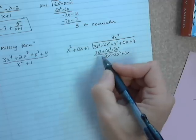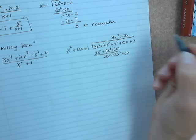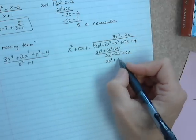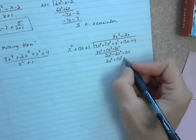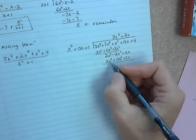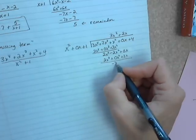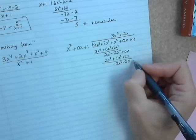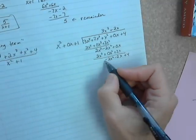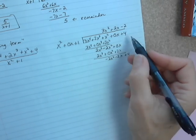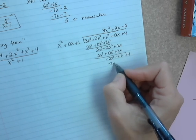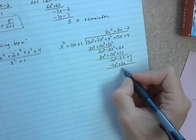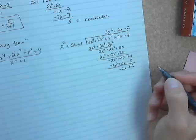Dividing 2x³ by x² gives 2x. Multiplying 2x times the whole thing: 2x³, then 2x times 0 is 0x², and 2x times 1 is 2x. When we subtract, the 2x³ terms go away, negative 2x² remains, and we get minus 2x. Then we drop down the plus 4. The last step is to divide negative 2x² by x², which gives negative 2. Negative 2 times the whole divisor is negative 2x² plus 0x minus 2. When you subtract, you get negative 2x plus 6, and that's our remainder.